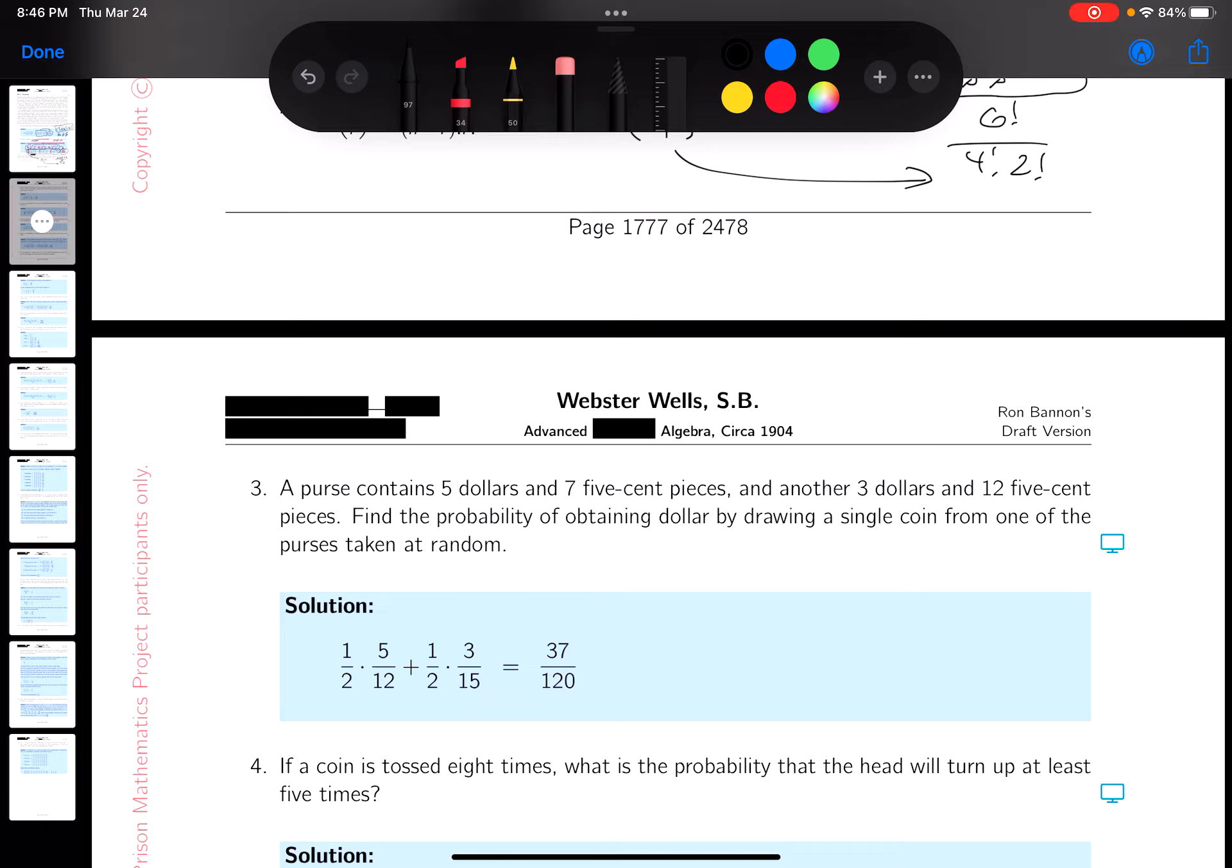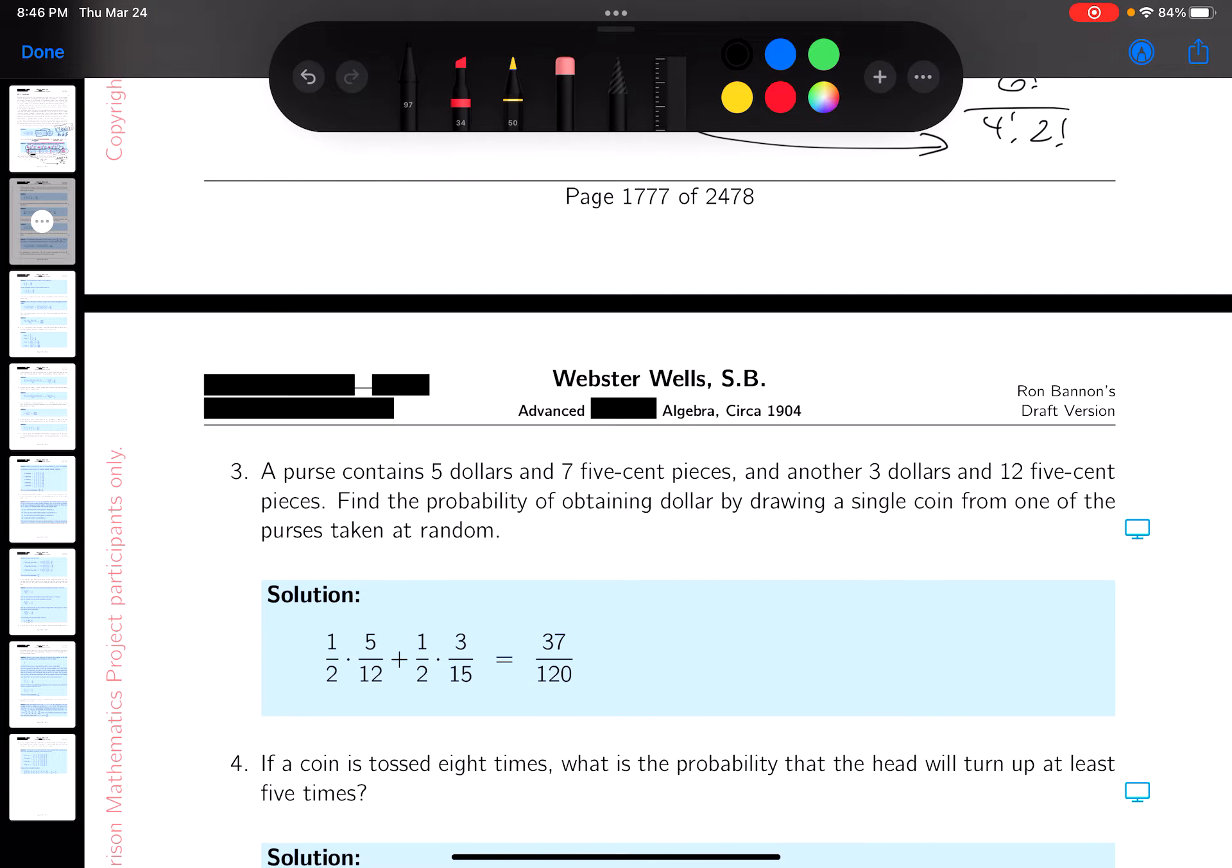Okay, these are coin problems. So there's, I'm going to say there's $5 coins there. So I'm going to just say D, D, D, D, D. And then there's seven five-cent pieces.